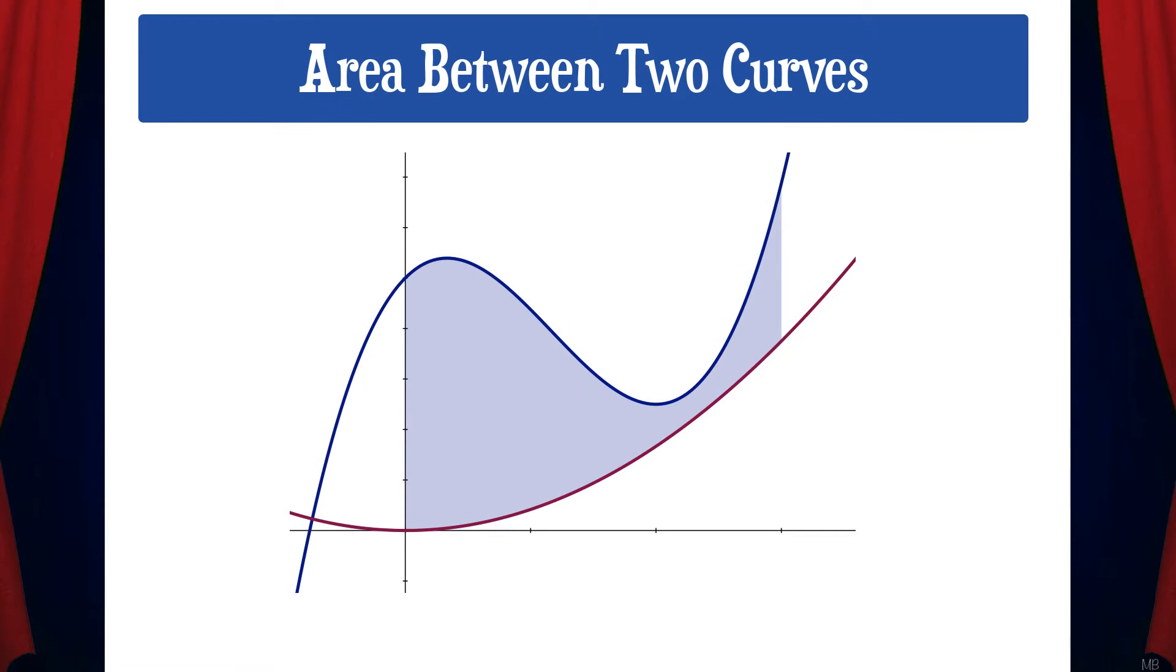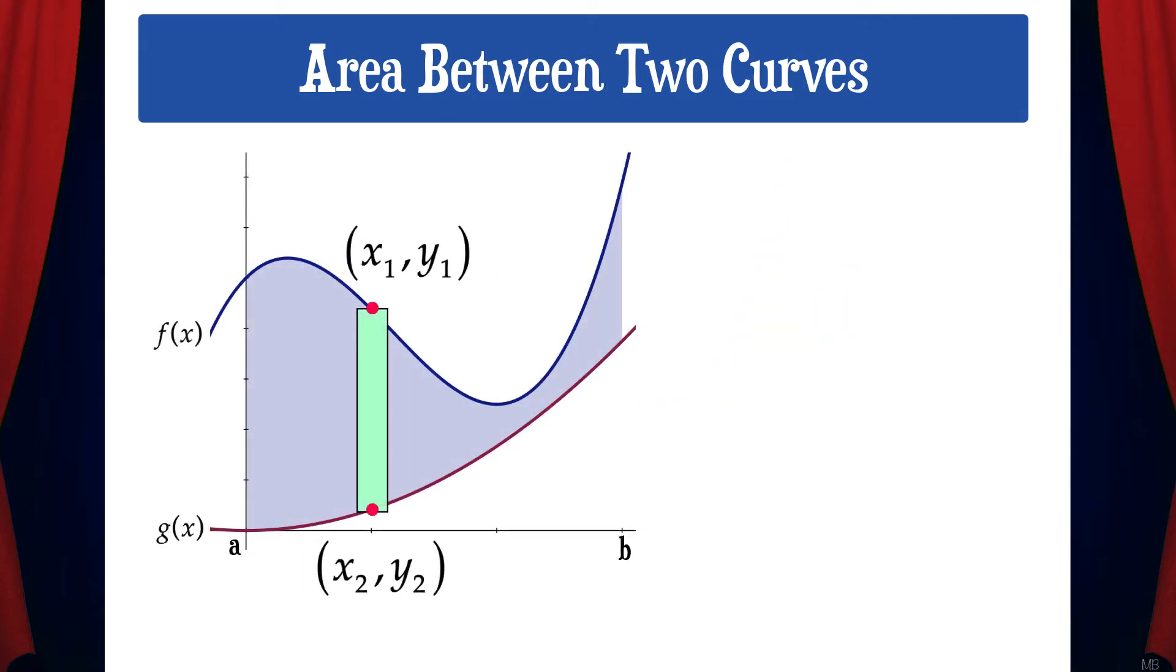And now to find the area between two curves, what we'll do is take the area under the first curve and subtract the area under the second curve. Let's look at this from the perspective of a sample rectangle. Here's our sample rectangle. The top point is (x1,y1) and the bottom point is (x2,y2). We'll let dA be the area of this rectangle, and that area would be the quantity of y1 minus y2 times dx. Then the area between the two curves would be the sum of all the dA's.